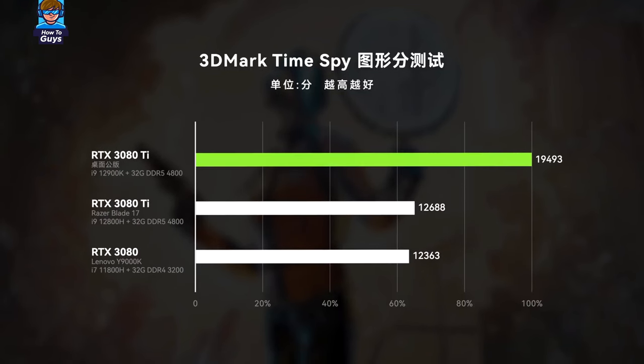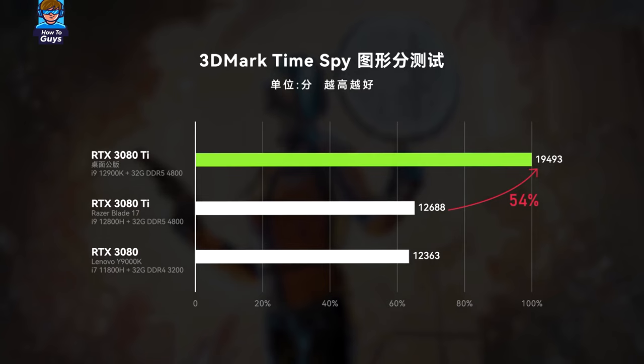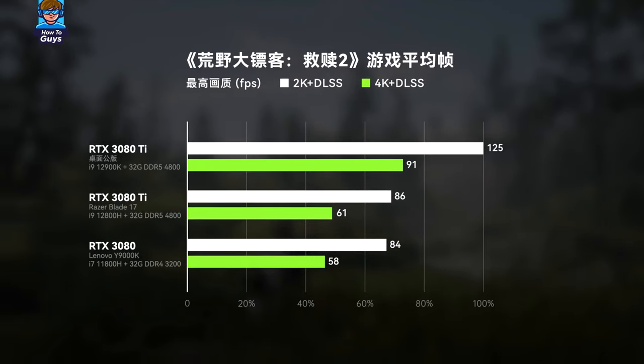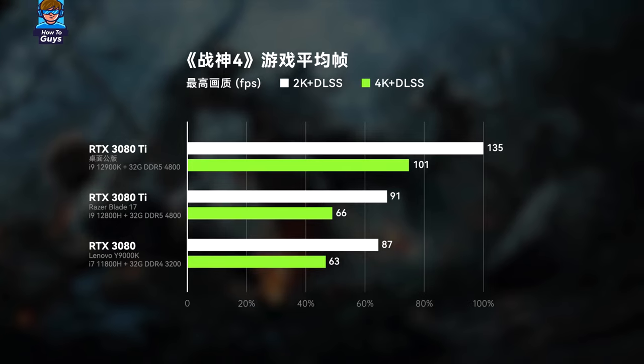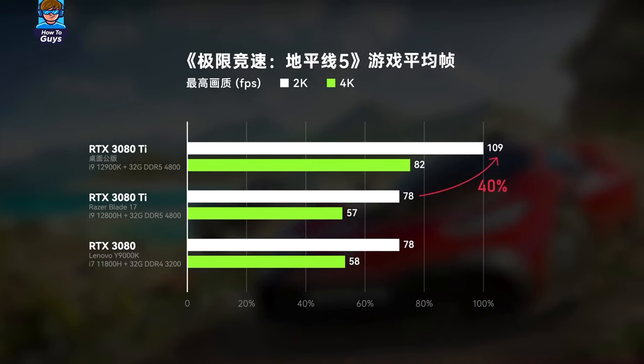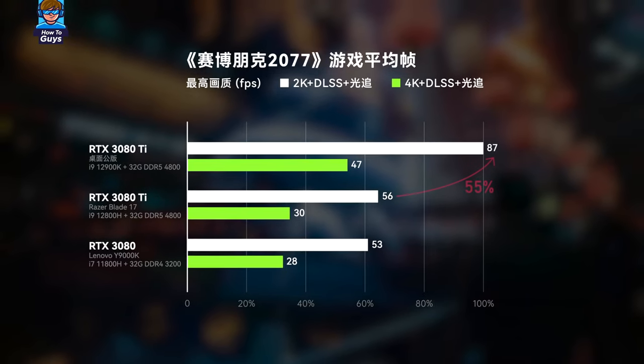As for the gap between the notebook 3080 Ti and the desktop 3080 Ti — everyone calls it 3080 Ti, but they are completely different. The desktop 3080 Ti scores around 19,500 in 3DMark, making it 54% stronger than the notebook version. In actual games, the two maintain a gap of 40 to 60%. With better optimization, the difference is around 40%, while in Cyberpunk 2077 the gap is close to 60%. The notebook 3080 Ti is essentially at the level of a desktop 3070.